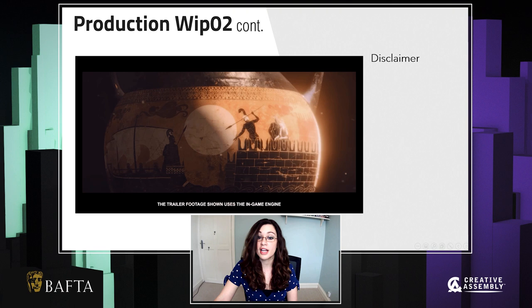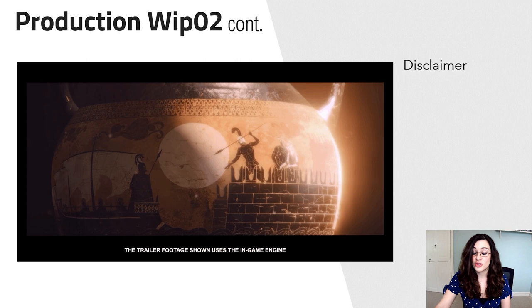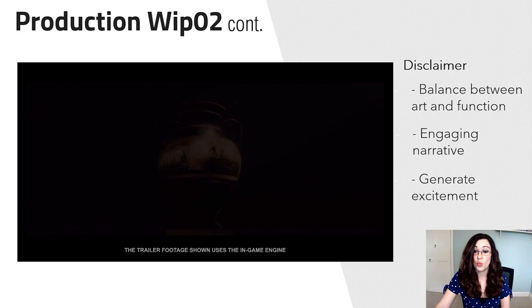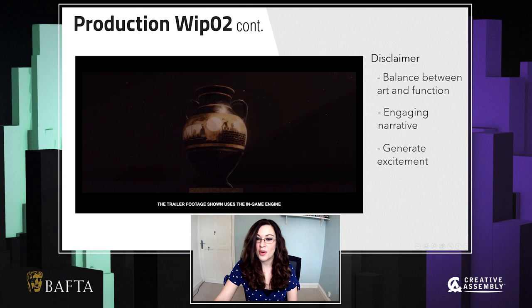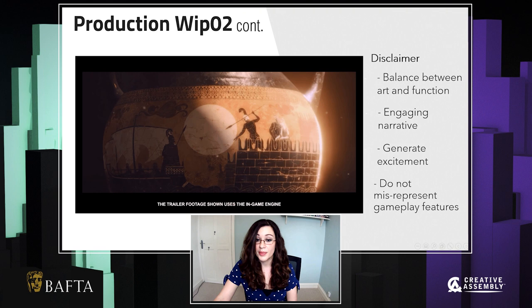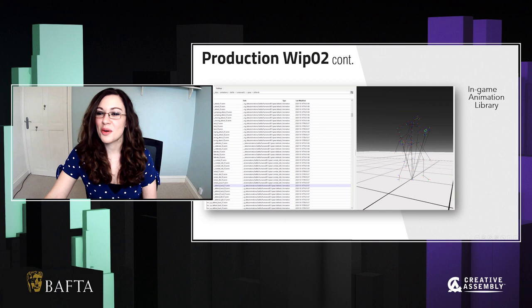You may have noticed that most of our trailers use the line, 'the trailer footage shown uses the in-game engine.' This is because our trailers have to strike a balance between art and function — the art is the storytelling and emotion, whilst the function is explaining to the audience what our game is and why they should be excited to play it. Although our trailers provide a narrative, they have to also give a sense of what a player actually does in Total War, and be super careful not to misrepresent any of the gameplay features. Which is why everything else you see — the rigs, the background animation, the props — can all be found within the game.